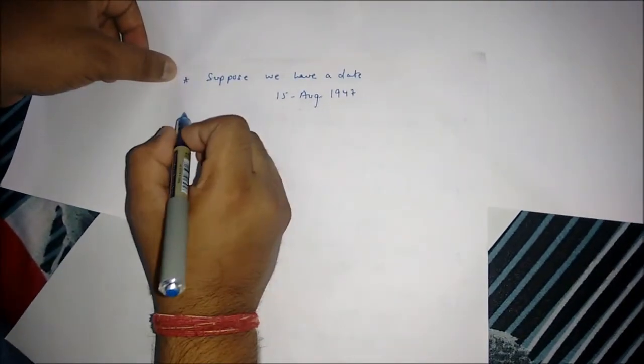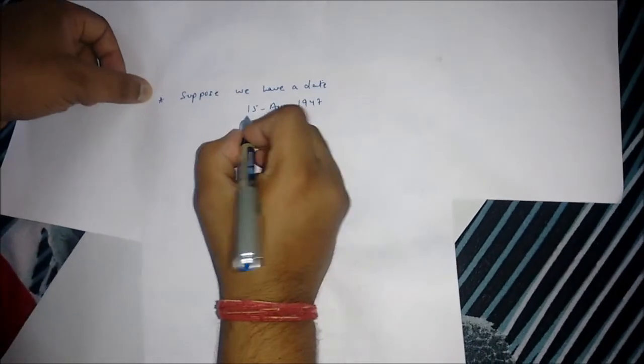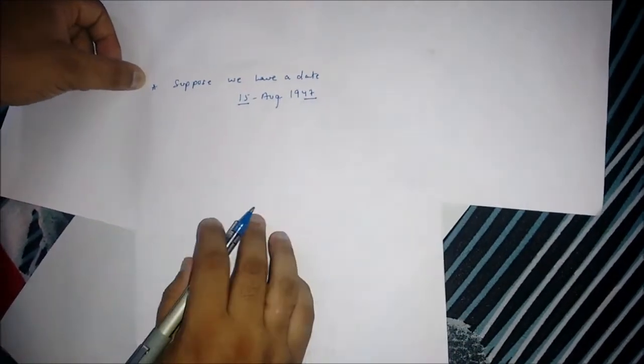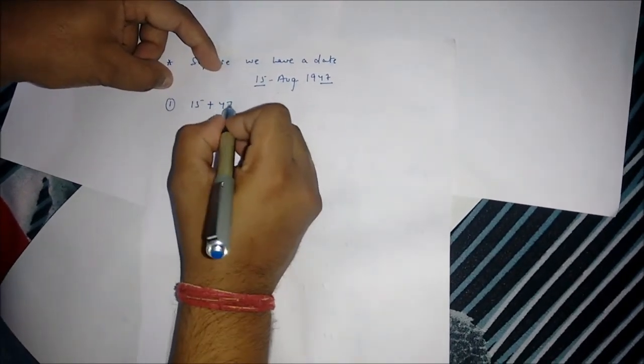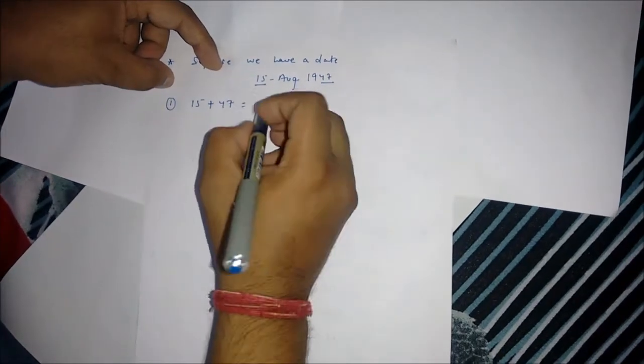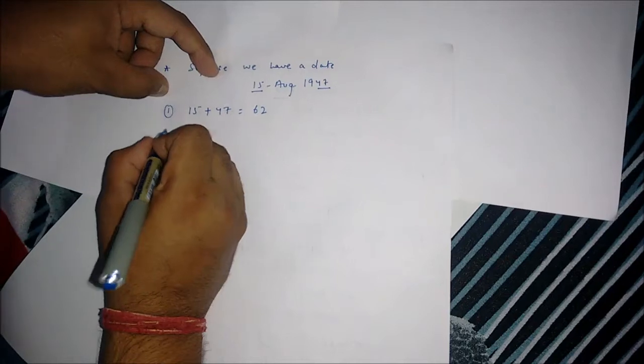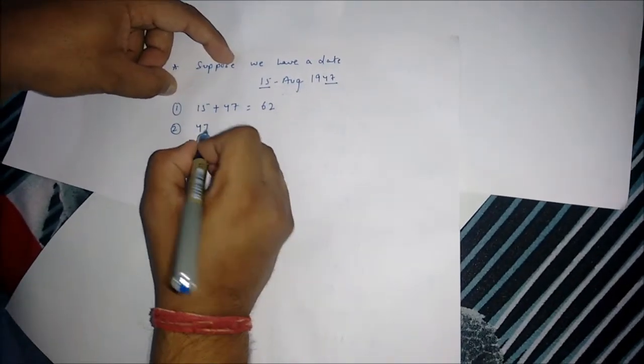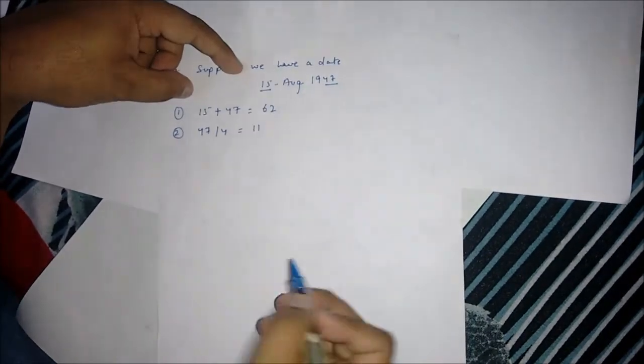Follow the steps as mentioned above. Firstly, take the day digit and the last two digits of the year. We get 62. The second step is divide 47 by 4. We get 11 as the quotient.